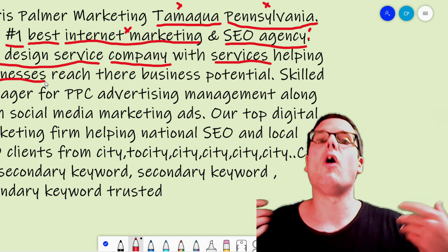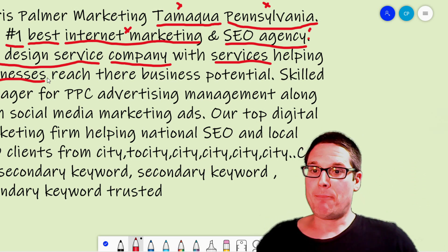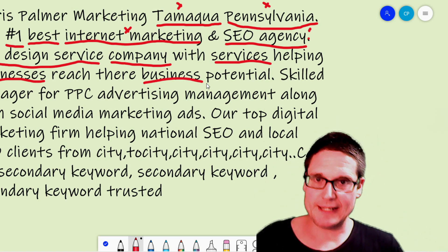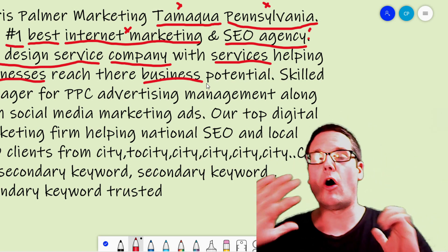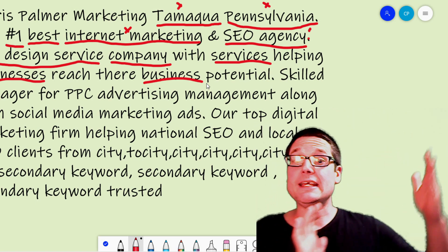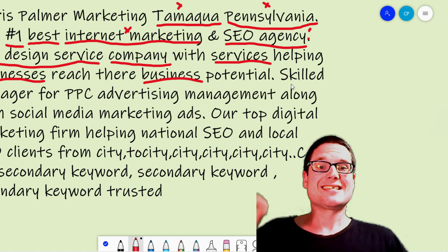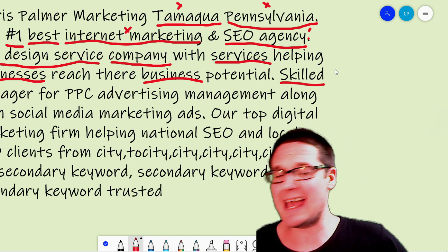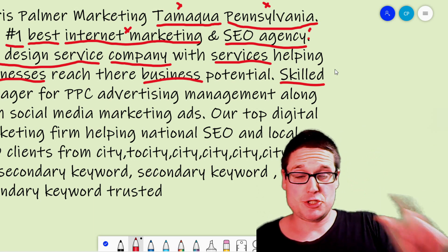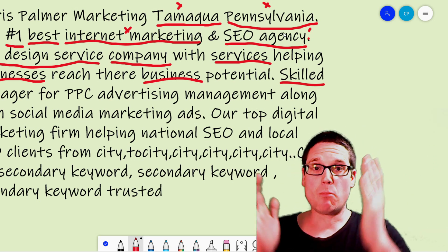At the end of this video I'll note what I feel is most beneficial. I put 'businesses reach their business potential' — the key is to have all the keywords, all the secondaries, all the primaries within the description, while also making it legible because I want to use this as my citation. You could also use words like 'expert' or 'skilled' — I'm looking for ways people are searching. Words like 'skilled manager' or 'expert manager' — it depends on your niche.